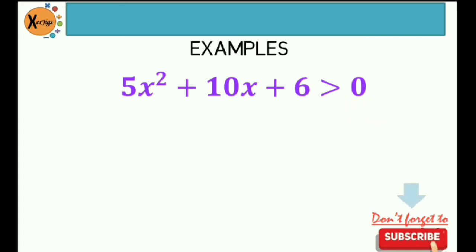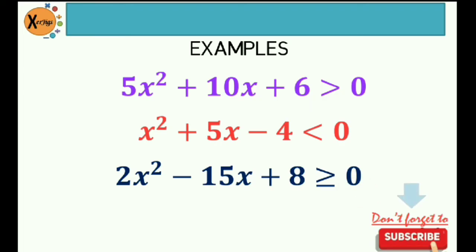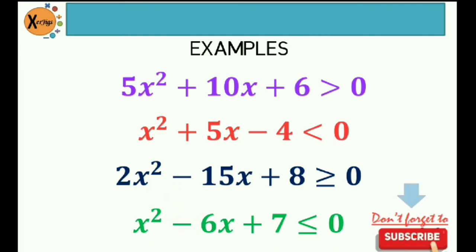Examples. 5x² + 10x + 6 > 0 is an example of quadratic inequality. There are two things to check: the highest degree is equal to 2, and the inequality symbol, which is greater than. Second example, x² + 5x − 4 < 0 — highest degree is 2 and inequality symbol less than. Third, 2x² − 15x + 8 ≥ 0 — highest degree is 2 and inequality symbol greater than or equal to. And lastly, x² − 6x + 7 ≤ 0 — highest degree is still 2 and the presence of inequality symbol less than or equal to.